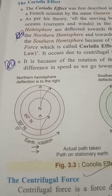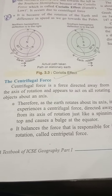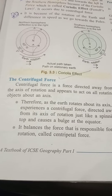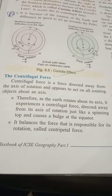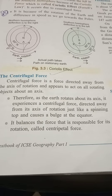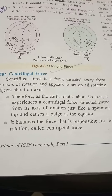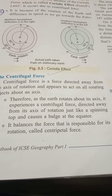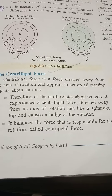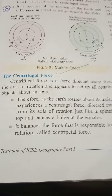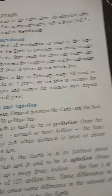In the diagram of the Coriolis effect, the north pole is depicted at the top and the south pole at the bottom. The centrifugal force is directed away from the axis of rotation and acts on all rotating objects. As the earth rotates about its axis, it experiences this centrifugal force directed away from the axis. Just like a spinning top, this causes a bulge at the equator, and it is balanced by the centripetal force, which is responsible for the rotation.